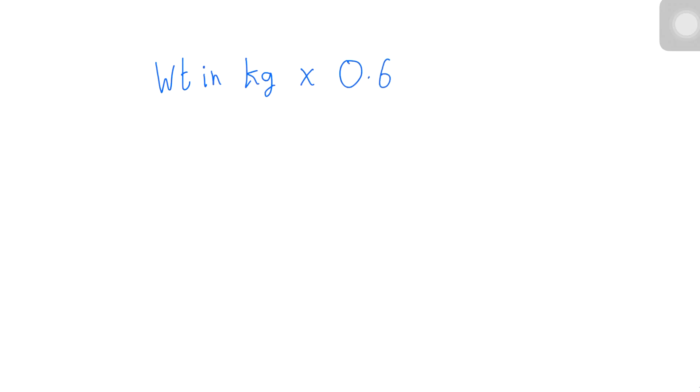In an average person, about 60% of the body's weight is water. If you want to calculate how much water you have in your body, just take your weight in kg and multiply it by 0.6 to get your total body water. For example, an average weight of 70 kg multiplied by 0.6 gives you a total body water of about 42 liters.